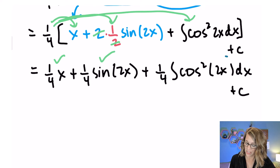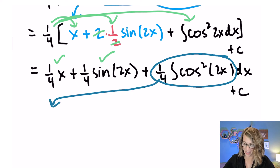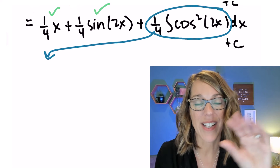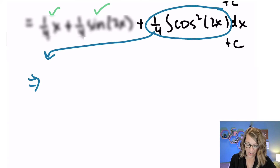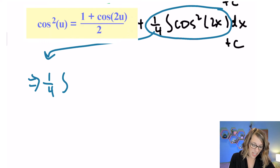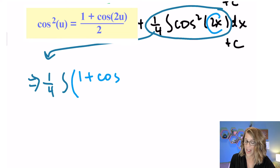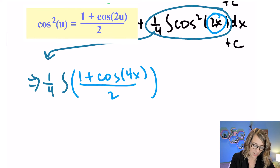What's left is to evaluate the integral of cos²(2x) dx. I'll pull this aside and deal with it separately — just to keep things organized. I apply the power reduction formula again: cos²(2x) = (1 + cos(4x)) / 2, since twice the angle 2x is 4x. So the integral becomes (1/4) ∫ (1 + cos4x)/2 dx.